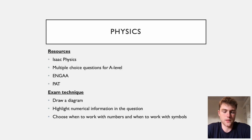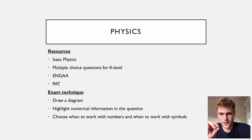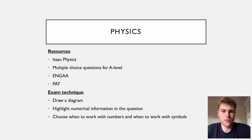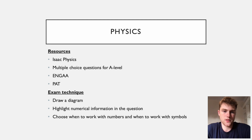For physics exam technique: draw a diagram — it's really useful for summarising information, labelling lengths and speeds, so you don't have to keep referring back to the question. Highlight numerical information in your diagram so it's quicker to find. Think carefully about when to work with numbers versus symbols. Working with symbols is useful for long algebraic manipulation; for SUVAT questions, for example, start with symbols, rearrange, then plug in numbers. For probability questions or simpler physics, using numbers directly can be quicker and save you a few seconds.